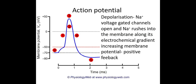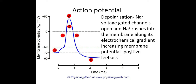First of all, an action potential — this is the proper scientific terminology for a nerve impulse. An action potential is generated in a neuron as it travels along the neuron, as the nerve impulse travels along. The first thing we need to know is that resting potential at minus 70 millivolts is at this point on the graph, but also on the other side, which you'll see in a minute.